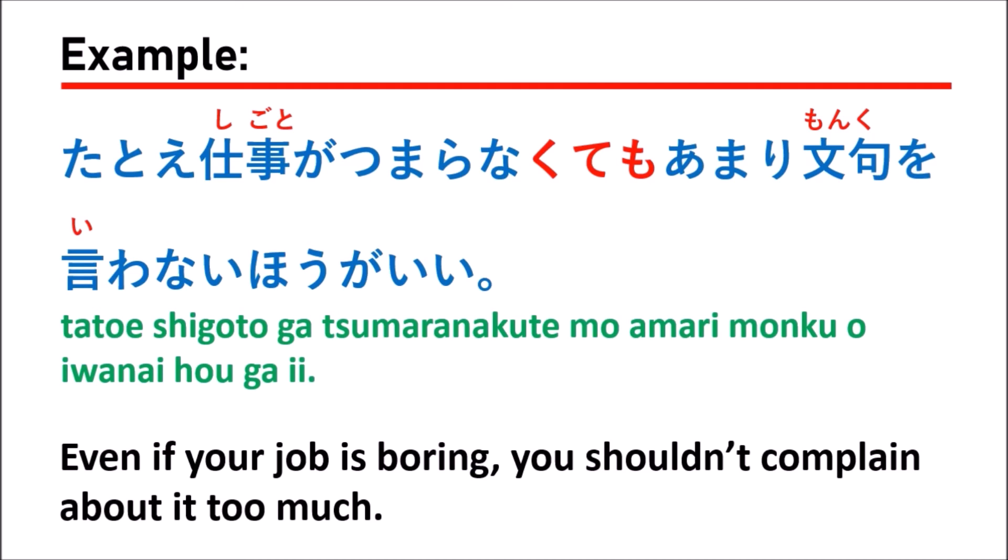In this example, they use the i-adjective つまらない, which means boring. When we cut the い and follow by くても, we get つまらなくても. So たとえ仕事がつまらなくても means 'even if your work is boring,' and あまり文句を言わないほうがいい means 'you shouldn't complain about it too much.'